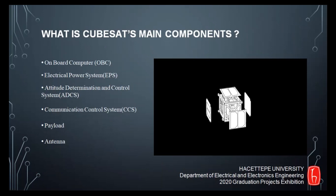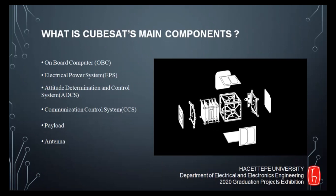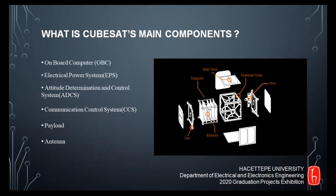Let's look at the CubeSat's main components. The onboard computer system manages all internal tasks of the CubeSat. The electrical power system is responsible for power management between subsystems and solar panels. The attitude determination and control system is responsible for keeping the satellite in its dedicated orbit. The communication control system and antenna provide communication between the ground station and CubeSats. Payloads vary from CubeSat to CubeSat and are designed for a specific purpose such as radiation measurement or video transferring.